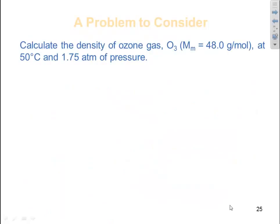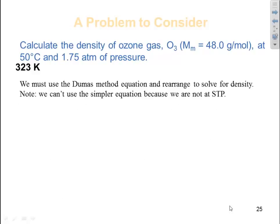Let's look at an example. Calculate the density of ozone, molar mass 48.0 grams per mole, at 50 degrees C and 1.75 atmospheres of pressure. Well, we know we got to change Celsius to Kelvin and we can use the Dumas method equation and rearrange to solve for density. However, a big important note here is that we are not at STP. I'm not at STP, so I cannot use the shortcut.